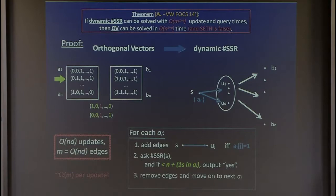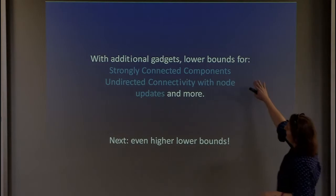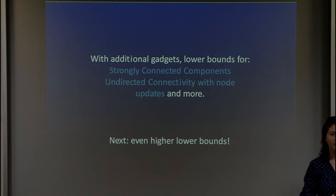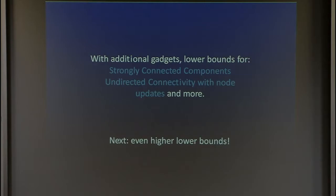The reduction of orthogonal vectors to single-source reachability is trivial, and the graph is always very sparse. With additional gadgets you can prove lower bounds for strongly connected components, even when you want to know if their number is more than two, for undirected connectivity with node updates, and so on. Most of these reductions are not too hard.